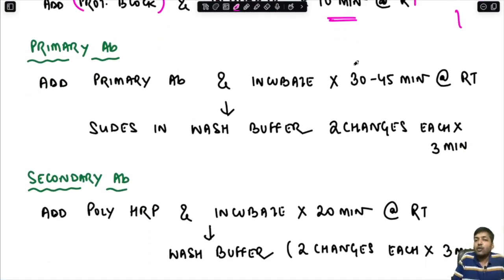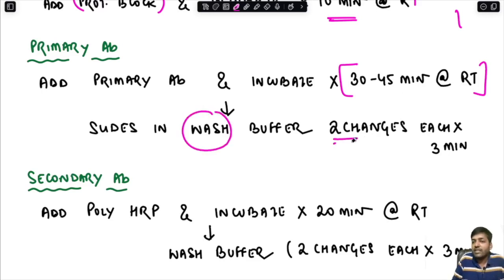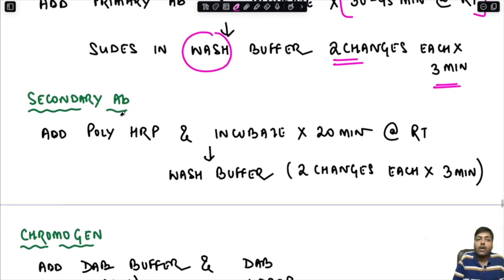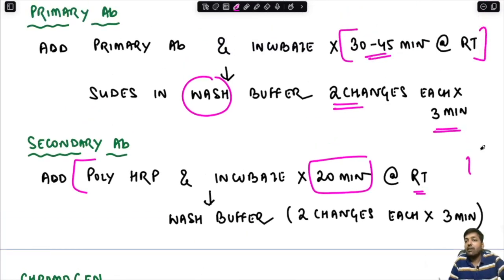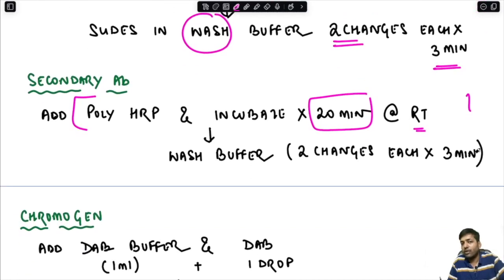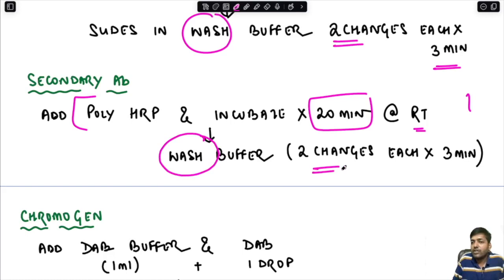Then add the primary antibody and incubate for 30 to 45 minutes at room temperature. Put the slides in wash buffer, two changes each for three minutes. Then add the secondary antibody — the poly horse radish peroxidase complex — and incubate for 20 minutes at room temperature. These timings vary from institute to institute. After the secondary antibody, wash again: two changes each for three minutes.